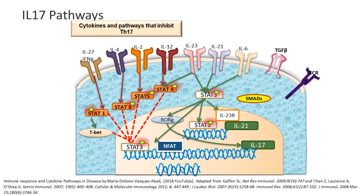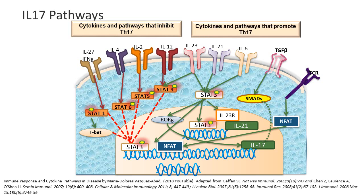STAT3 phosphorylation also increases expression of the IL-23 receptor, further augmenting the response to IL-23 into TH17 differentiation. The TGF-beta receptor through SMAD signaling also appears to have a positive effect on interleukin-17 production. Finally, the T-cell receptor through NFAT directly goes into the nucleus and stimulates IL-17.